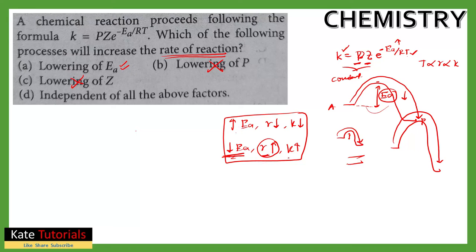Smaller Ea means a greater rate constant and greater rate of reaction. Therefore, the answer is option A — lower activation energy increases the rate of reaction. Options B, C, and D are wrong. Thank you.